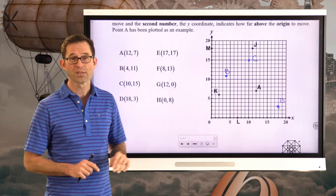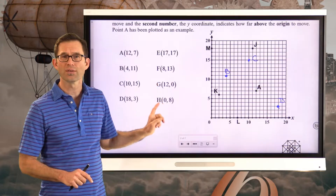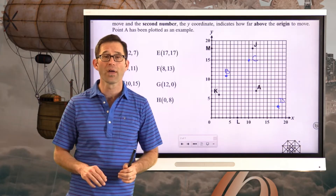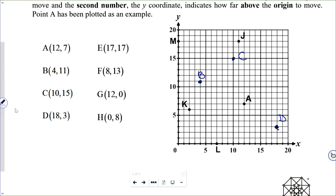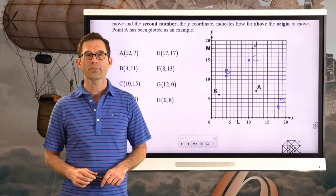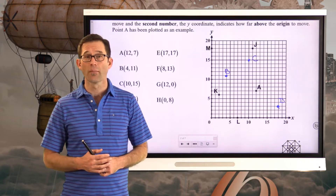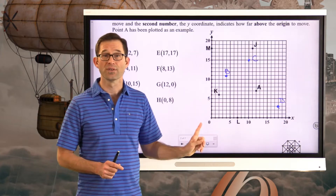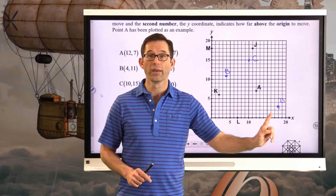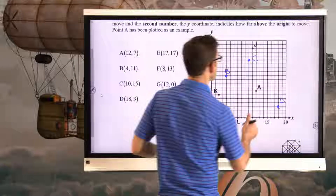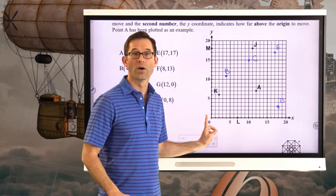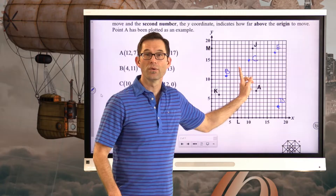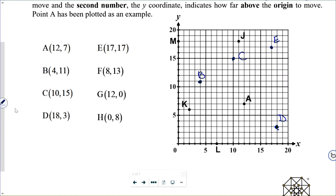Pause the video and plot E, F, G, and H. G and H are a little bit more challenging. For E at 17 comma 17, we go 17 units to the right and 17 units up, landing right here. For F at 8 comma 13, I go 8 units to the right and 13 units up, right here.